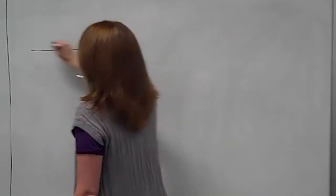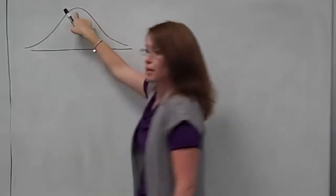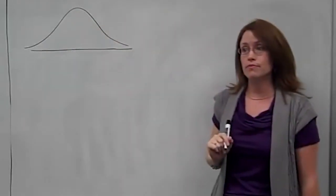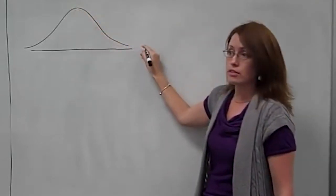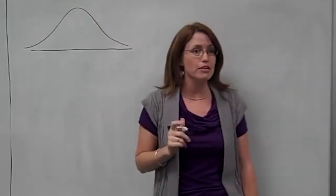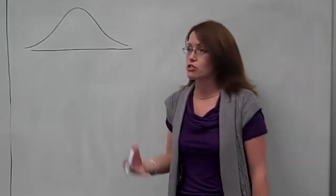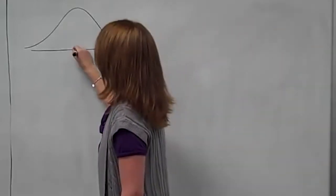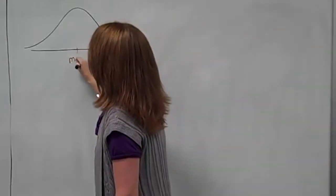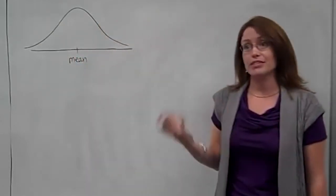As far as the shape, it is a bell-shaped curve. It looks symmetric. It has a high point in the middle and sloping sides off to the right and left. This is the basic idea of what a normal distribution looks like. The normal distribution is going to be centered around the mean and spread out based on the standard deviation.